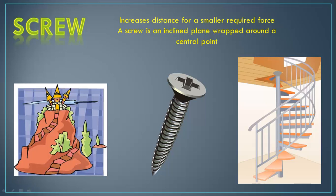So if you look at the picture of the spiral staircase, the pole in the center is the central point. And the inclined plane is the stairs wrapped around it. We're increasing the distance over which a force is applied so that we have a smaller amount of force. Making work easier.